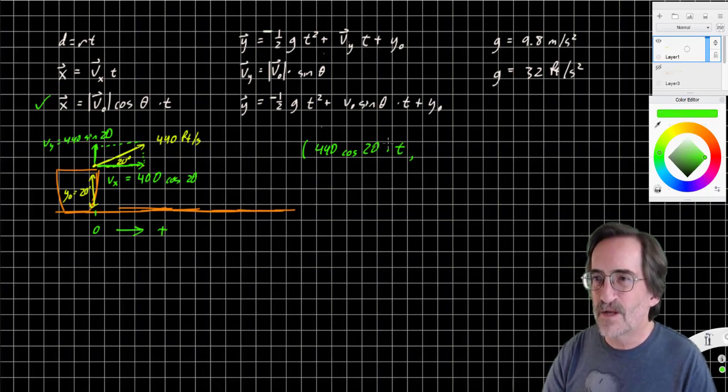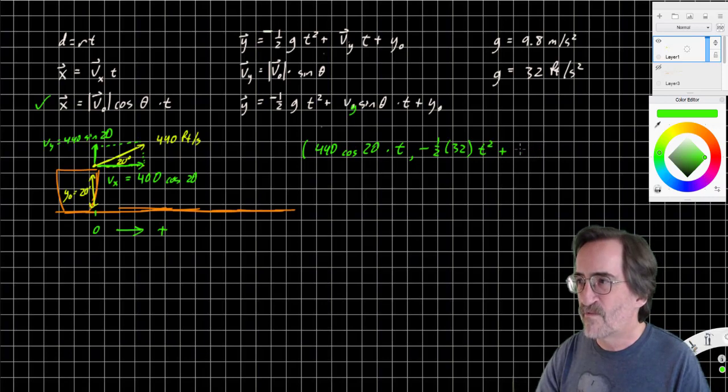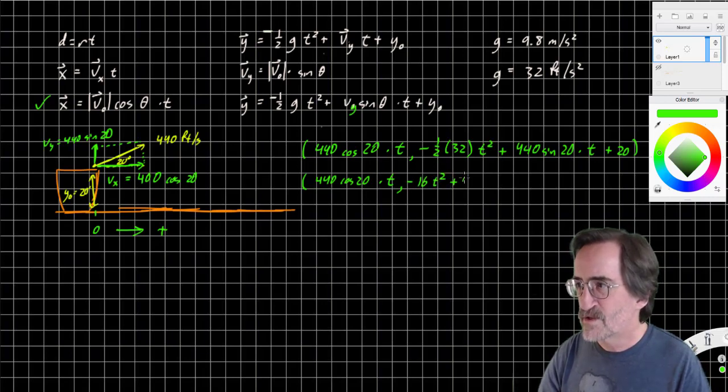Now we're operating in feet per second, so g is 32 feet per second, so negative one half of 32 times time squared, plus the velocity in the vertical direction, v sub y, 440 sine 20 times t, plus the initial height, 20 feet. Let's simplify a little bit. We're going to get 440 cosine 20 times time, comma, negative 16t squared plus 440 sine 20 times t plus 20.